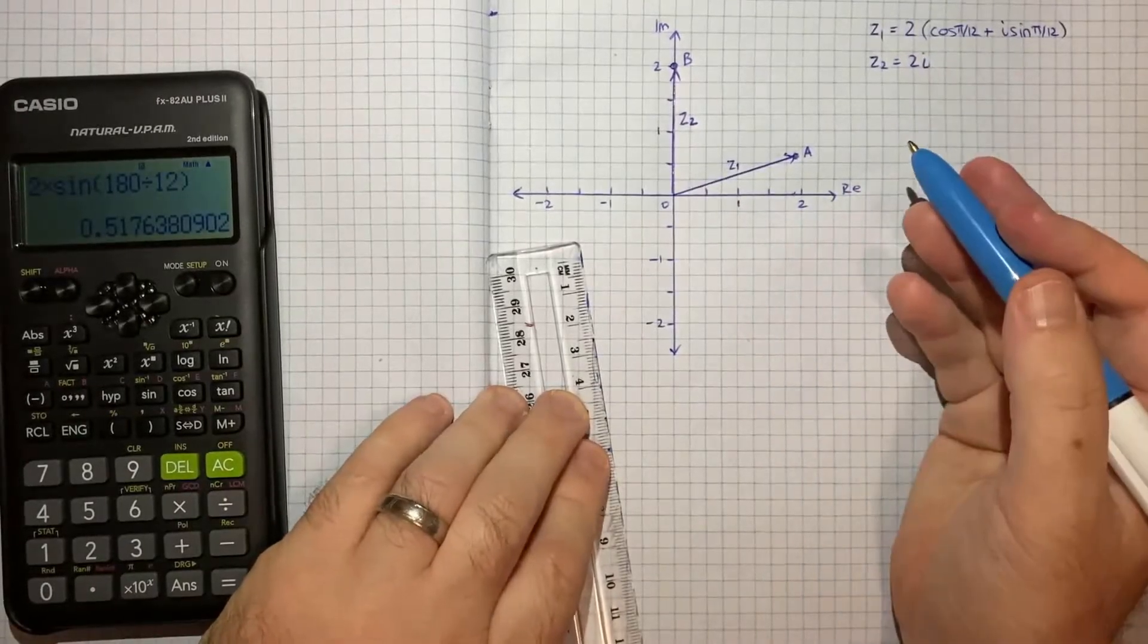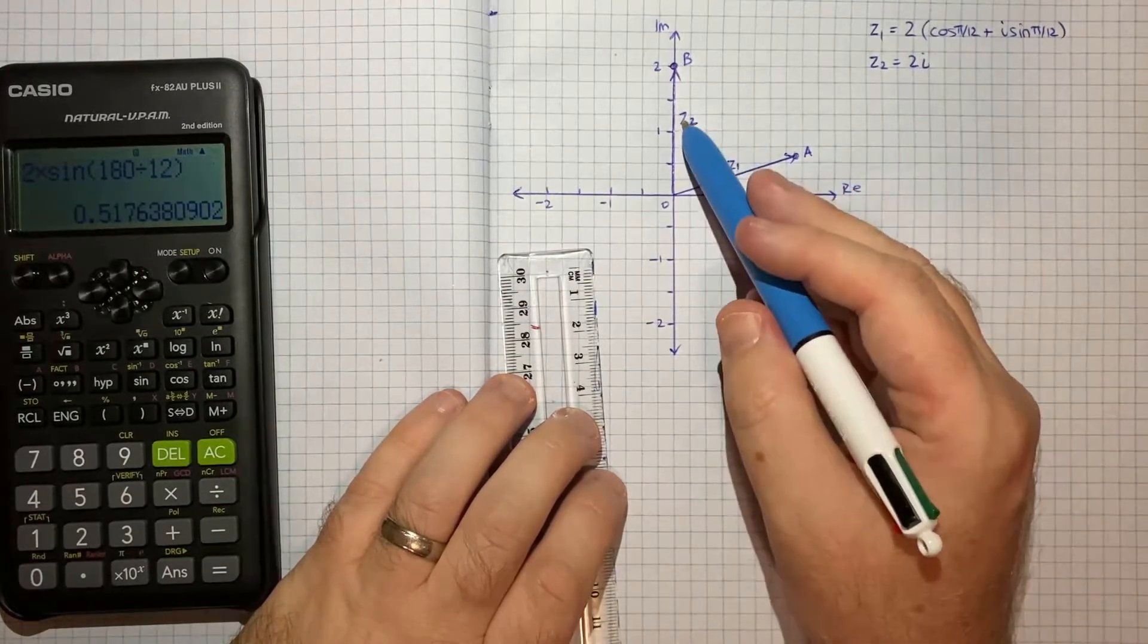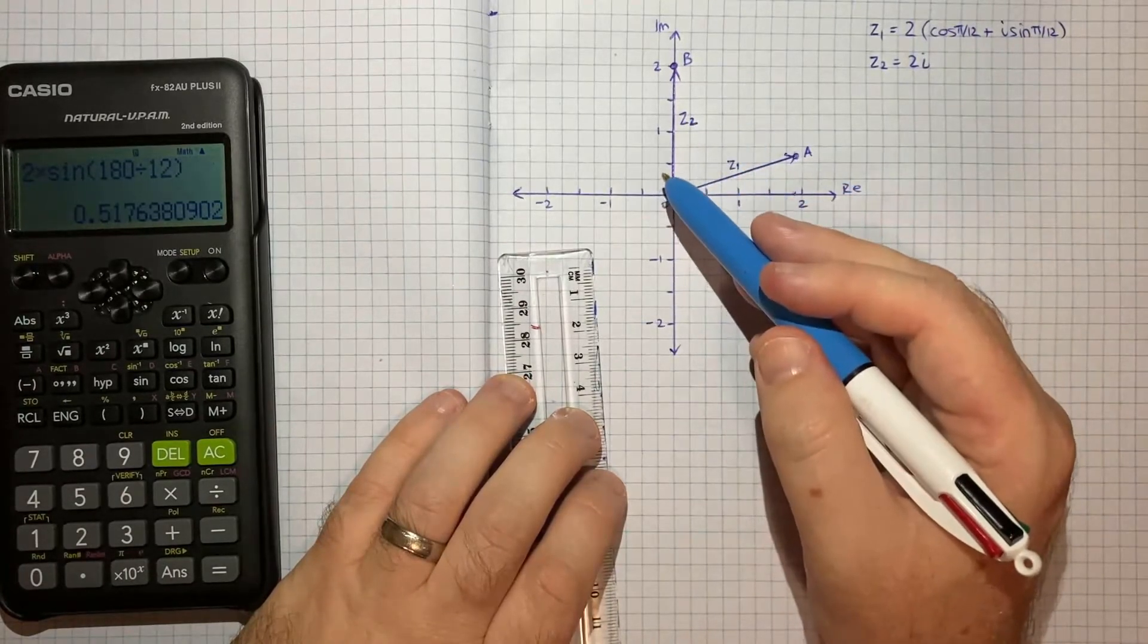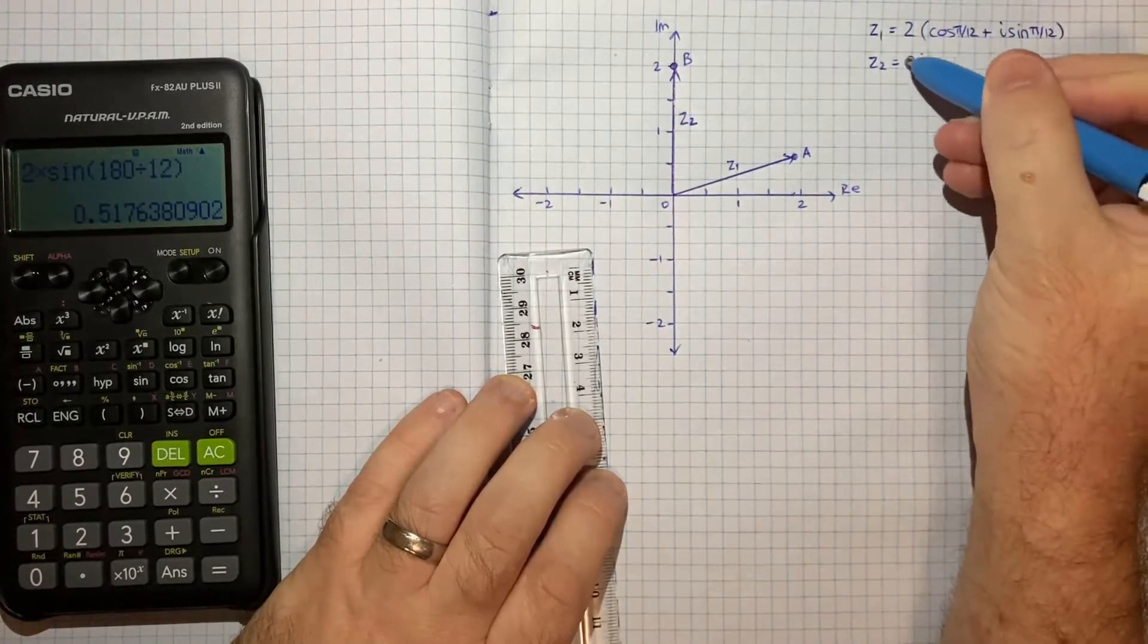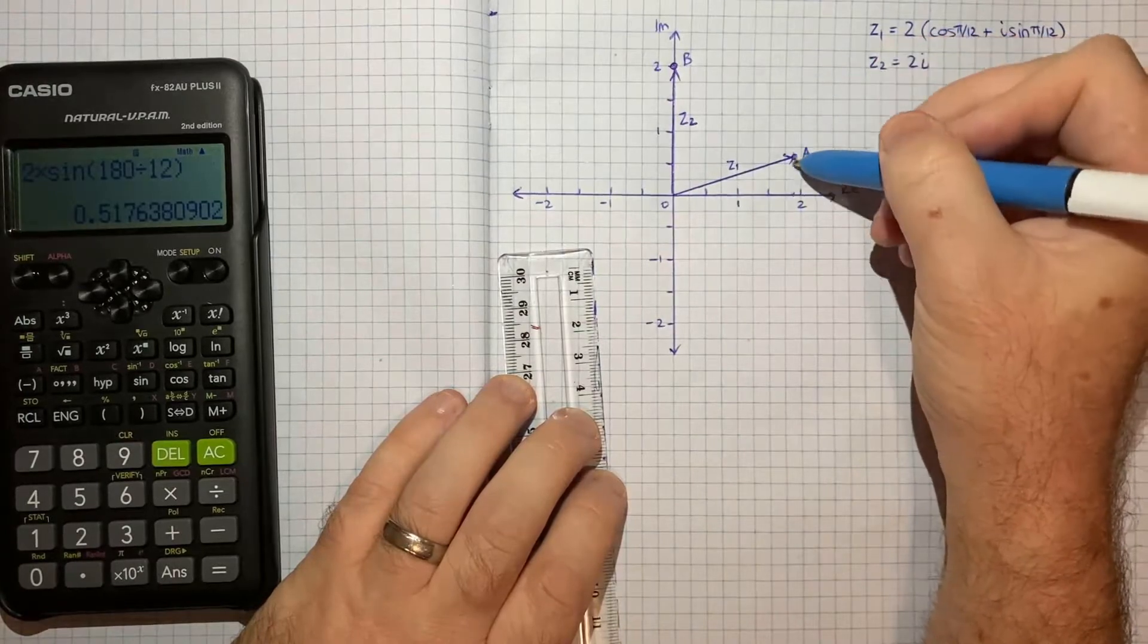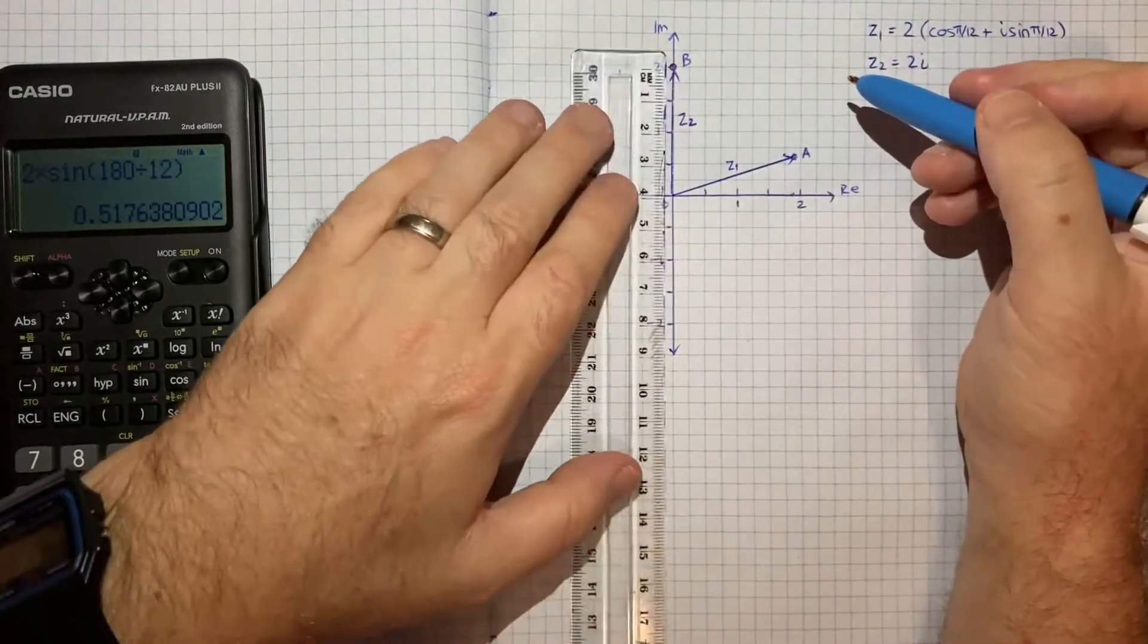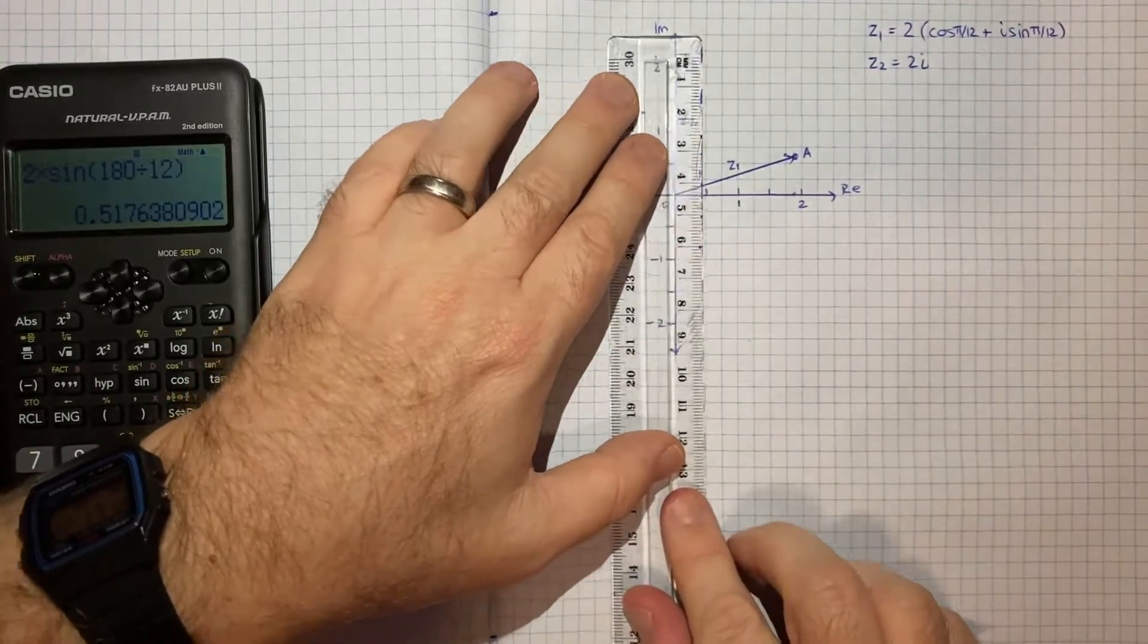So that's part 1 of the question done. Part 2 now asks us to plot z1 plus z2 and z1 minus z2. Now because z2 is just this imaginary part, it's really just shifting from A up and down two units. So we kind of take this vector and we slide over.